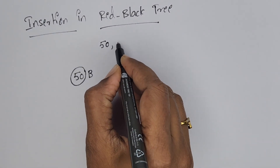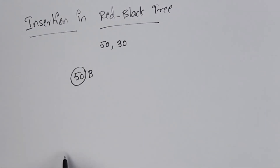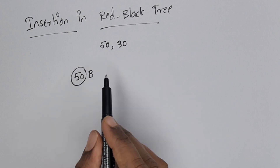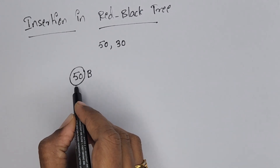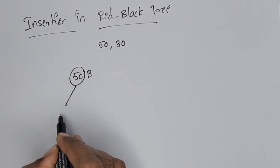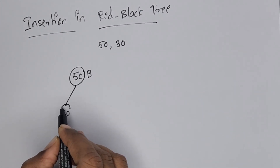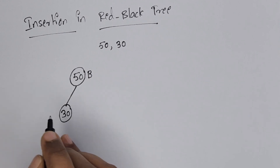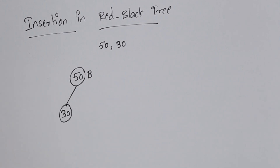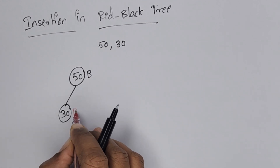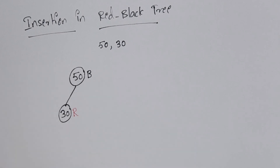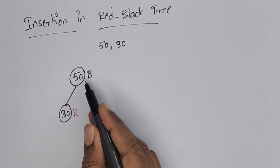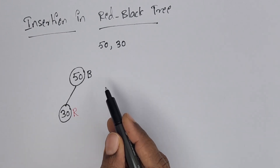The next element is 30. It is also a binary search tree. 30 is less than 50, so we insert 30 on the left side of 50. 30 is a new node and always a new node is colored red. The parent of this red node is black, so no problem.